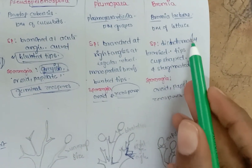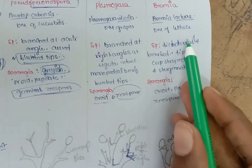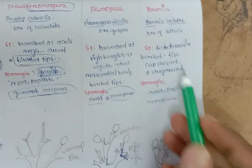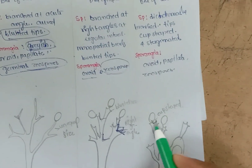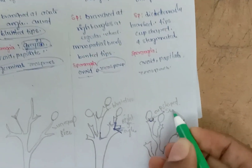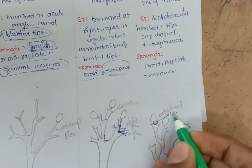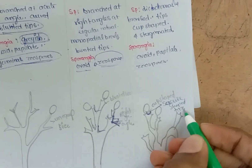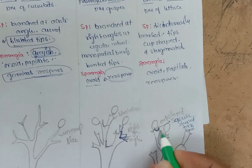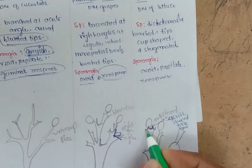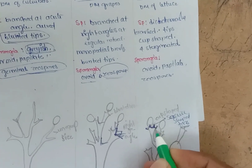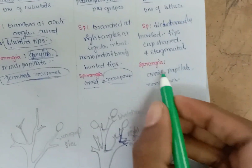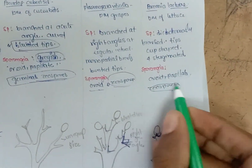The final genus is Bremia — for example, Bremia lactucae, the Downy Mildew of lettuce. It is dichotomously branched, but the tips have a distinctive cup-like or saucer-shaped structure. It has four sterigmata — you can observe positions one, two, three, and four — unlike the previous genera which had only two. Sporangia are ovoid, papillate, and germinate through zoospores.